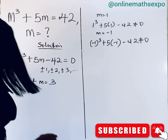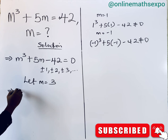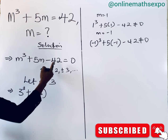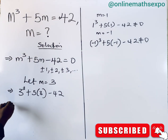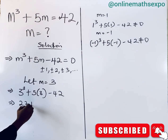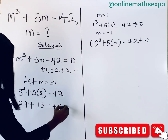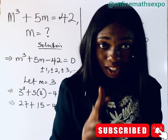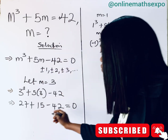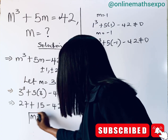Let's check when m = 3. You can check m = 2 on your own and let us know in the comments. Substituting m = 3: 3³ + 5(3) − 42 = 27 + 15 − 42 = 0. So m = 3 is indeed a solution!